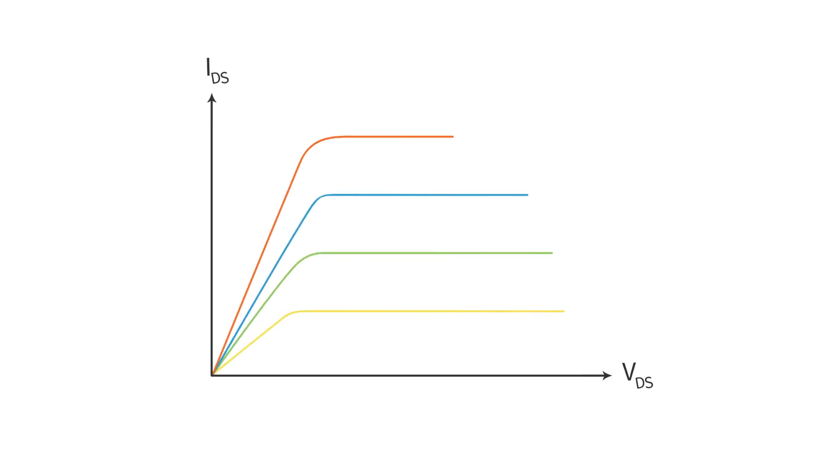For the JFET, the region where the channel current is linear to the drain to source voltage is known as the linear or ohmic region, and the region where the current is constant irrespective of the drain to source voltage is the saturation region. In the saturation region, a JFET behaves as a constant current source, which is one of the common applications of a JFET.